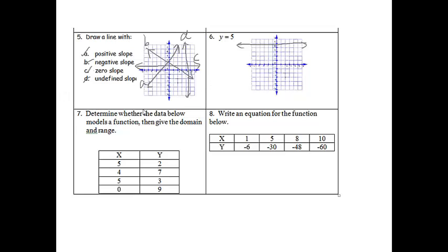So number 7, determine whether the data below models a function, then give the domain and range. So I need to say whether it's a function and then give the domain and range. So make sure we get both parts. If I'm looking at this, I notice right away that I have 5, 2 and I have 5, 3. So the input of 5 has 2 outputs and that cannot happen. So I'm going to say no and I'm just going to say 5 has 2 outputs and that is not okay.